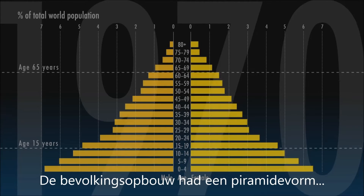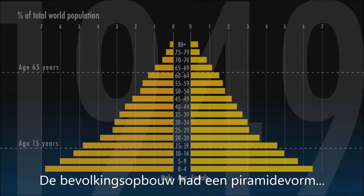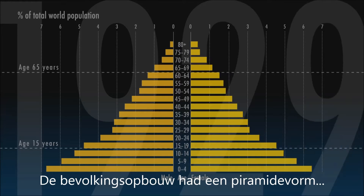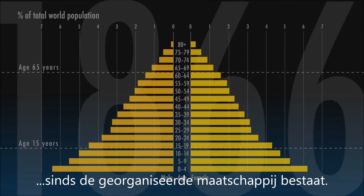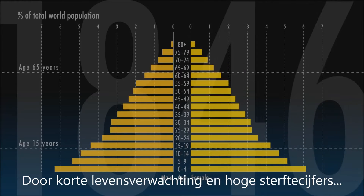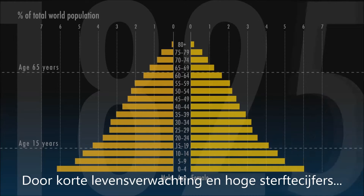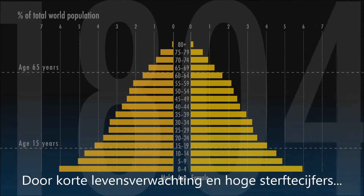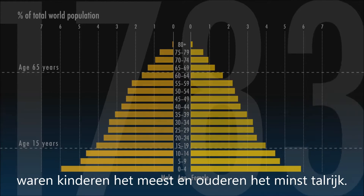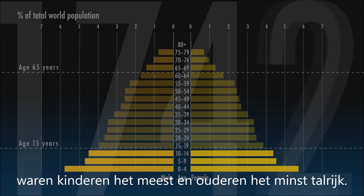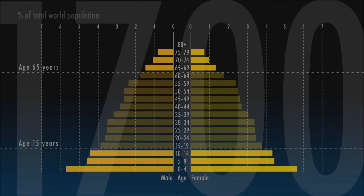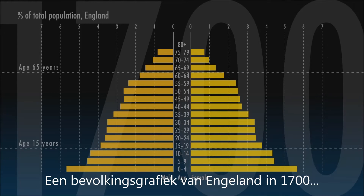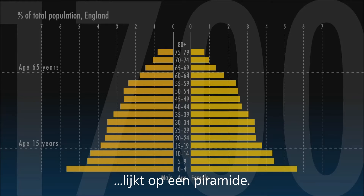The pyramid was characteristic of human populations pretty much since the day organised societies emerged. With lifespans short and mortality high, children were always the most, and old people the least, numerous group. A population chart of England in 1700 looks like a pyramid.